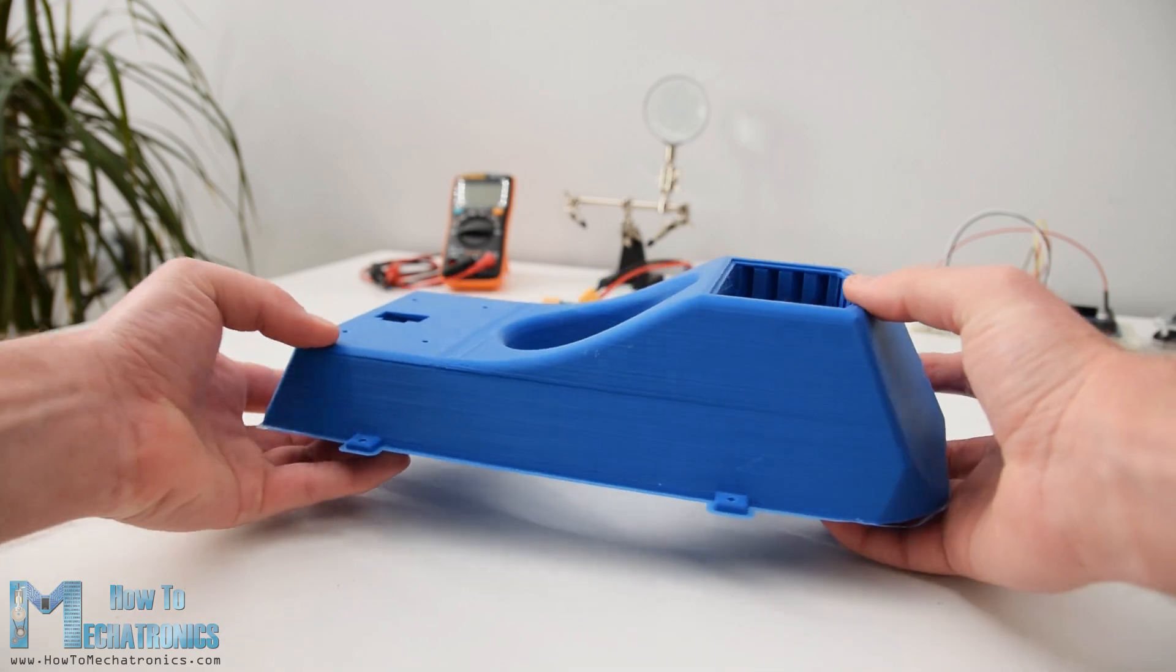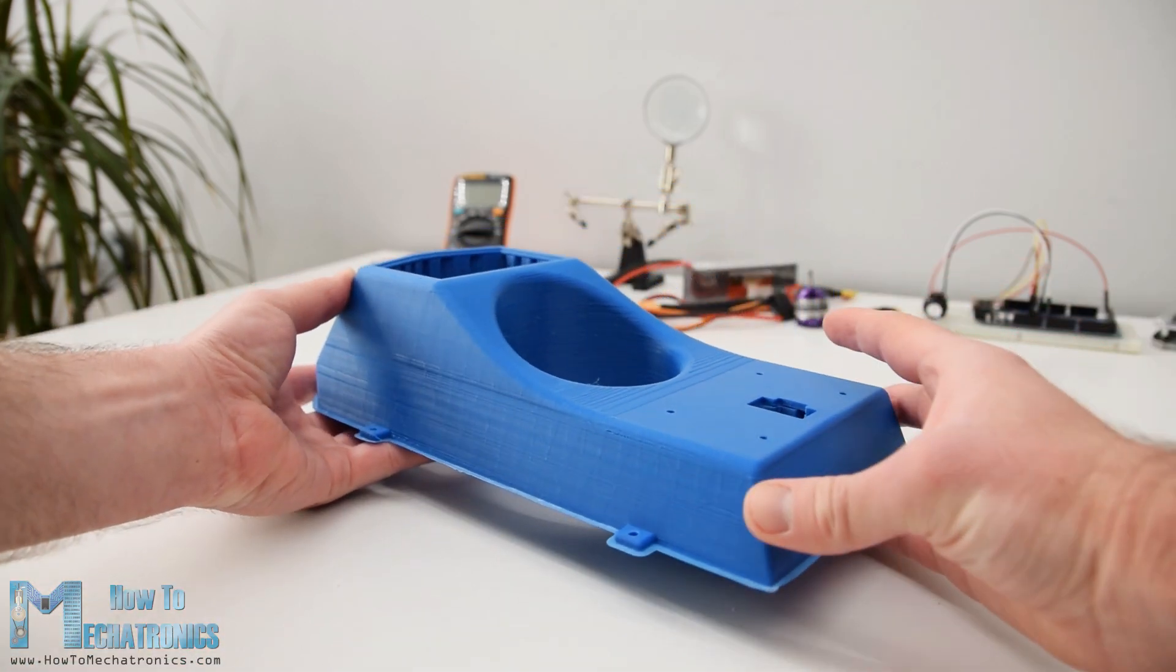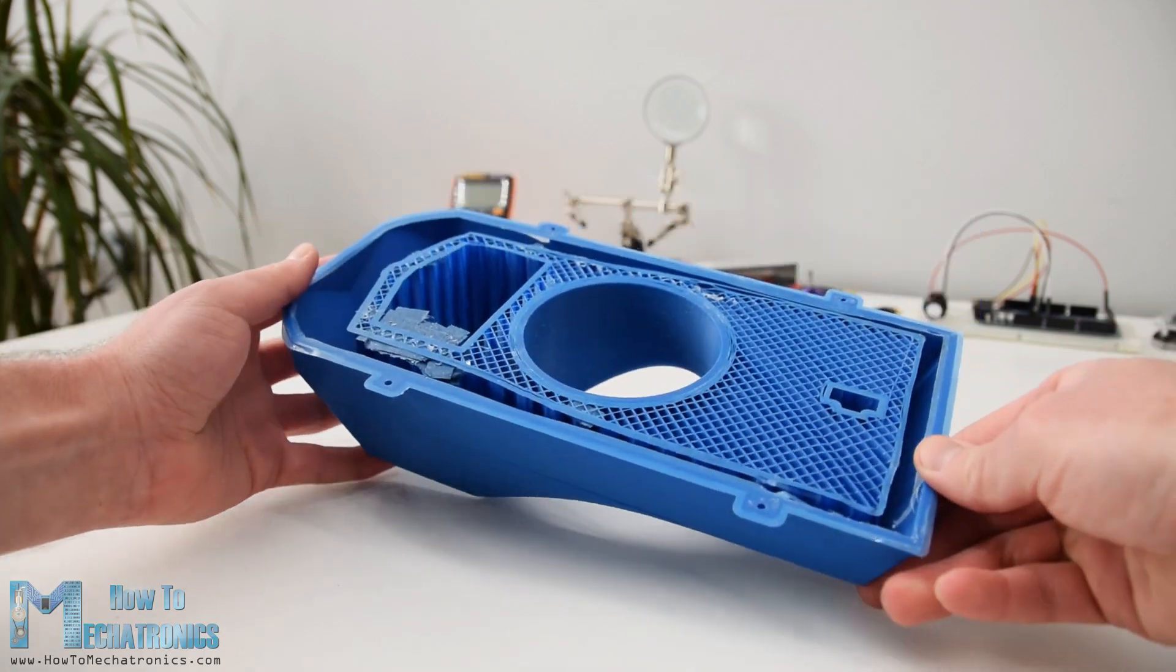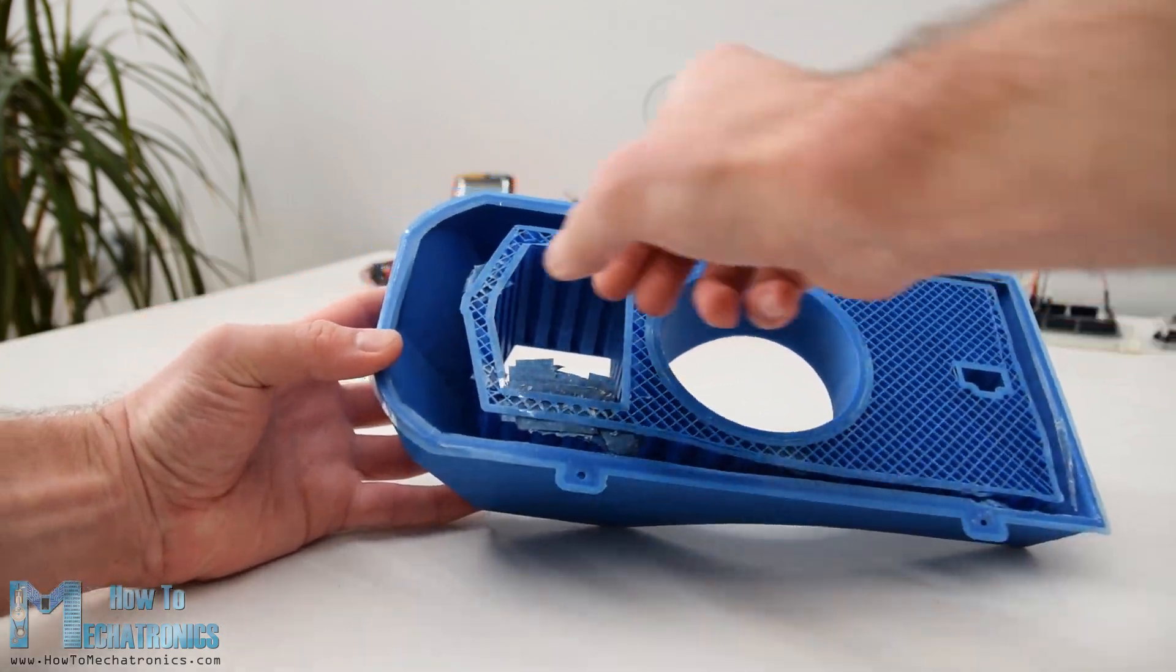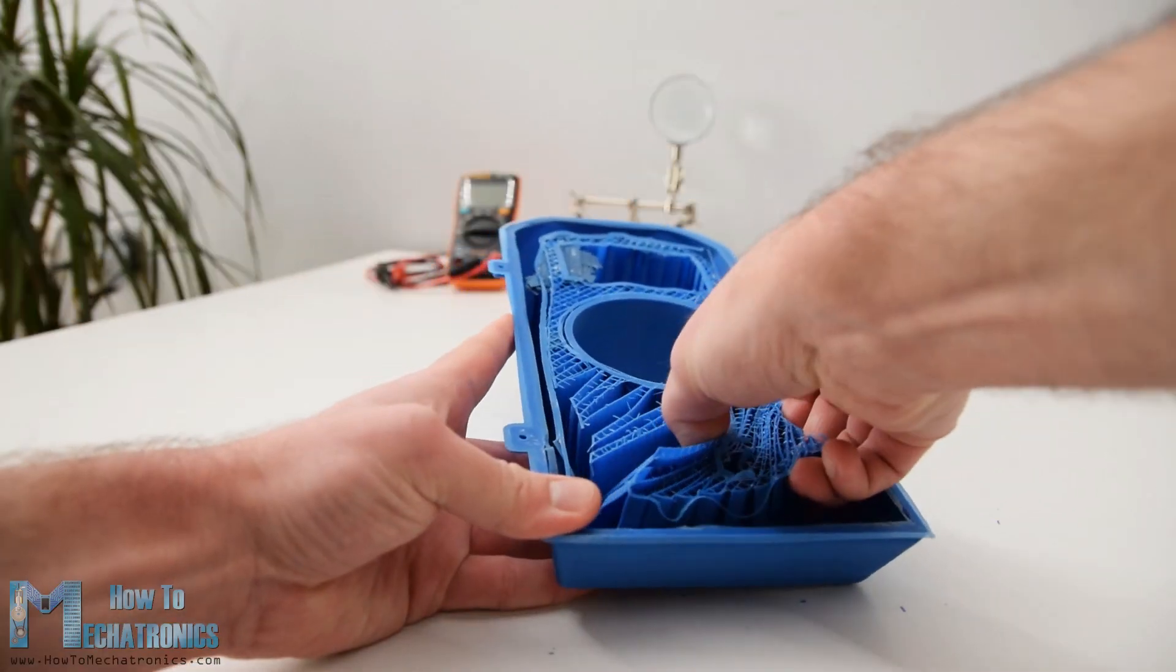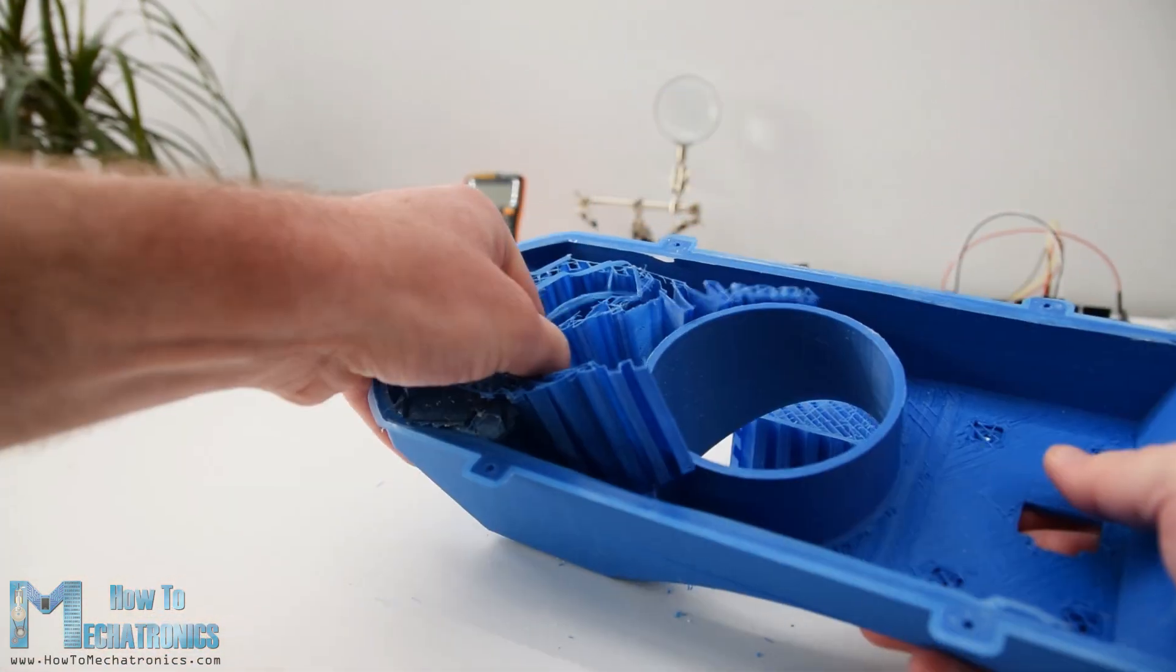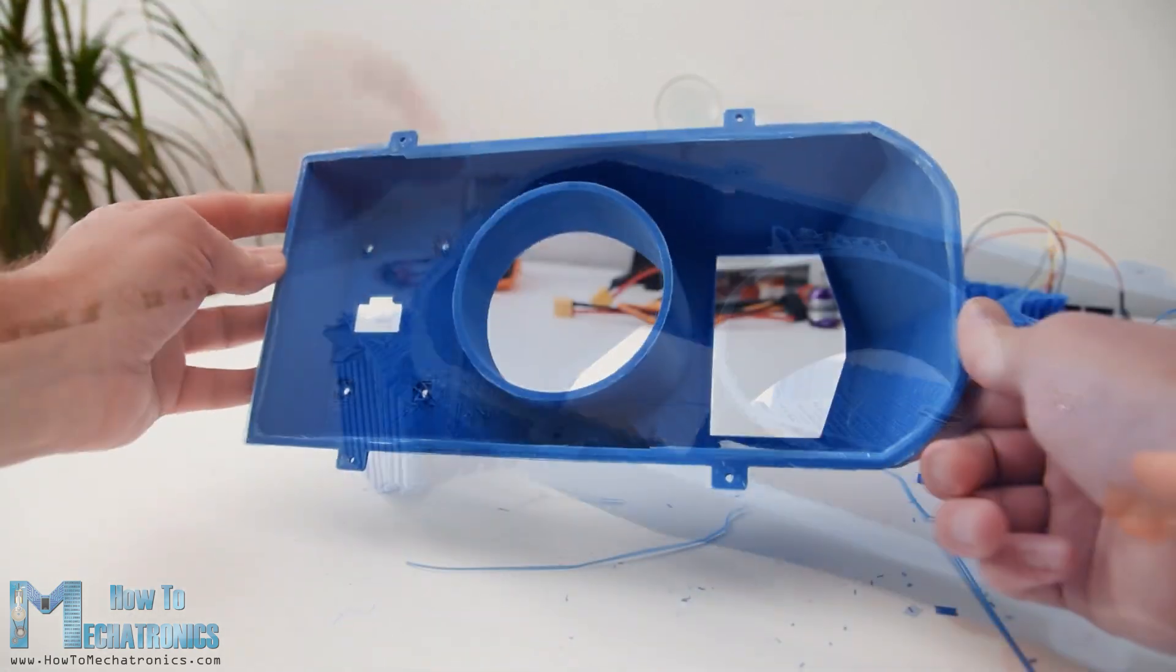So after the printing is done, it's time to do some cleanup. The main body of the hovercraft or the cockpit was the longest print, which took around 18 hours to print. Because of the curved design and because I wanted it to be a single print, there was a lot of support material used for this print. However, it was really easy to remove and the final piece turned out just perfect.